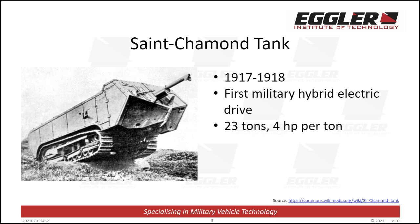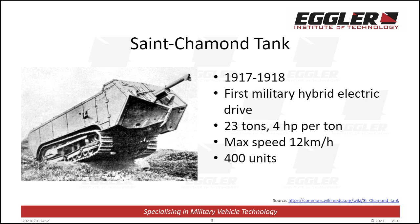Despite its weight, the tank could manage a very respectable top speed of 12 kilometers per hour. It was powered by a hybrid electric drive consisting of a 4-cylinder, 90-horsepower gasoline engine coupled to an electric generator providing power to two separate electric motors, one for each track. The vehicle's power-to-weight ratio was 4 horsepower per tonne. The St. Chamond tank was largely considered to be a failure at that time. Its principal weakness was its Holt Caterpillar tracks, which were far too short in relation to the vehicle's length and weight of 23 tons, producing high ground pressure and poor mobility in the muddy and artillery-cratered battlefields. The overhanging front part of the tank also reduced longitudinal stability, making traversing trenches or obstacles very difficult. All up, 400 St. Chamond tanks were manufactured.